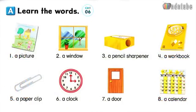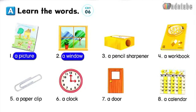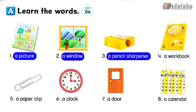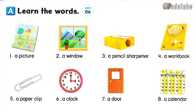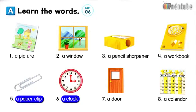Page 6. Let's learn. A. Learn the words. Number 1: a picture. Number 2: a window. Number 3: a pencil sharpener. Number 4: a workbook. Number 5: a paperclip. Number 6: a clock. Number 7: a door. Number 8: a calendar.